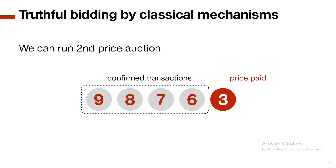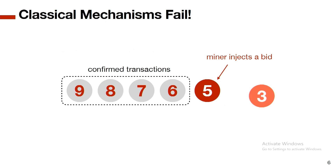We can run a second-price auction, and from classical auction theory we know users should reveal their true value and it is guaranteed to be optimal. But the issue with second-price auctions is that miners can easily manipulate the price. The clearing price is the lowest bid in the block, so miners can inject fake bids — say five — making everyone pay two dollars more. Or the miner can collude with the user with the lowest bid and say 'bid five instead and we'll split the profit.'